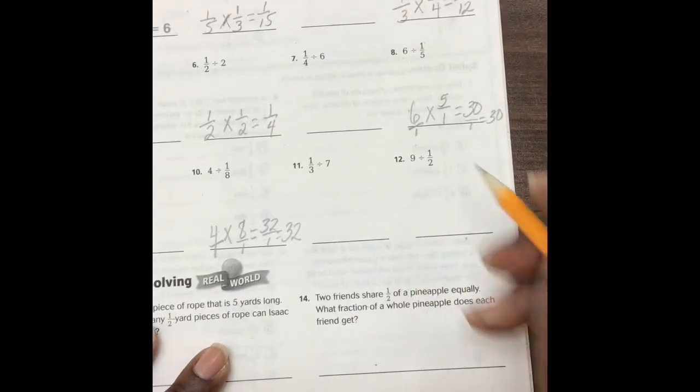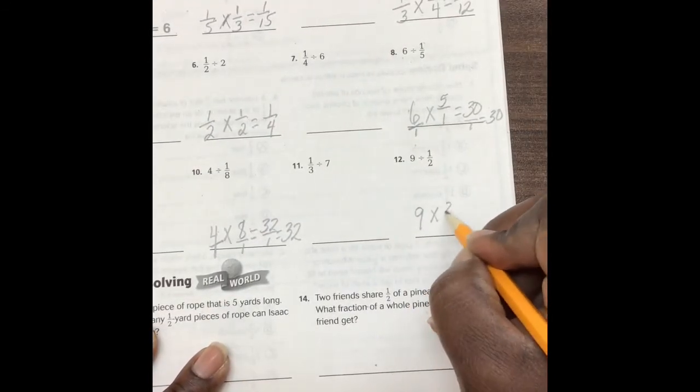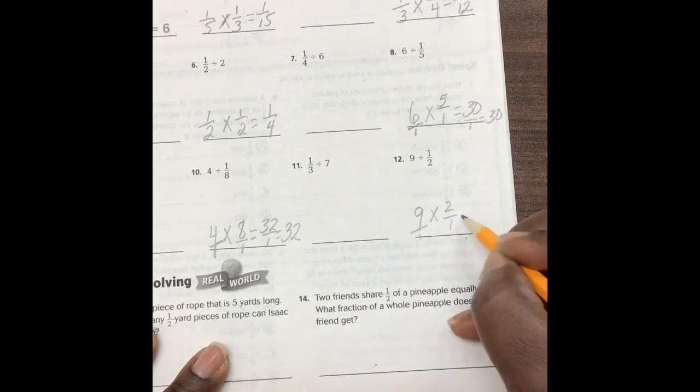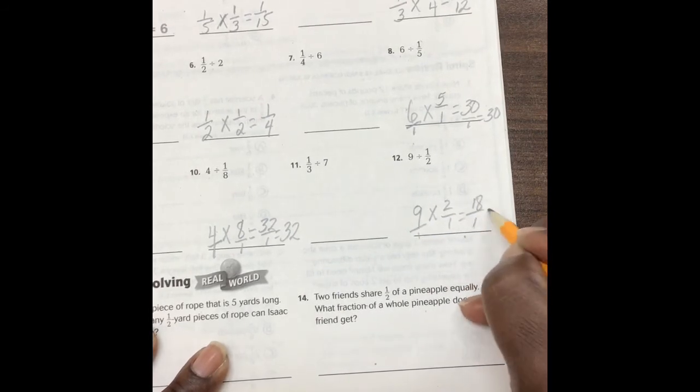Here, 9 times 2 over 1, 1 over 1. That gives us 18 over 1, which is 18.